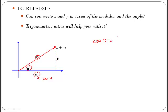Therefore, cos of θ is x over r, and then if we want to get x by itself, we just need to multiply across by r, and that gives us x is equal to r cos of θ.